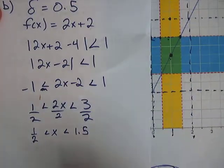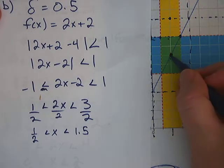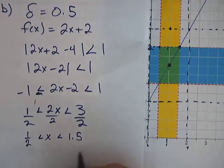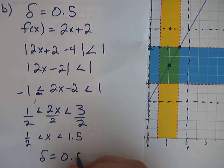And we ask ourselves the same question. How far are these away from our value that we know is at the function, which is x equals 1? Right here gives us the function value of 4. How far are these two away from 1? Well, they're the same distance, and it is delta is equal to 0.5.